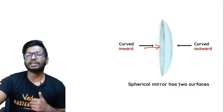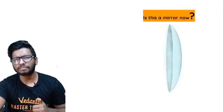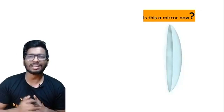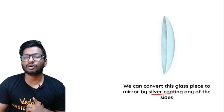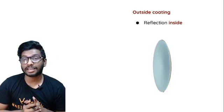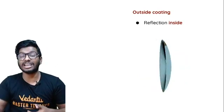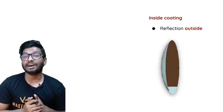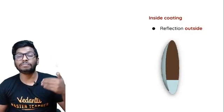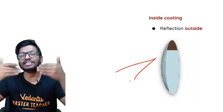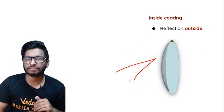You might ask: can you still call this a mirror? Glass is a transparent object, so how do you convert it into a mirror? Very simple — all you have to do is silver-coat the other side. If I silver-coat the outer side, then the inner curved surface becomes my reflecting surface. If I silver-coat the inner side, then the outer surface becomes the reflecting surface. Whichever side I silver, the opposite side becomes the reflective surface.